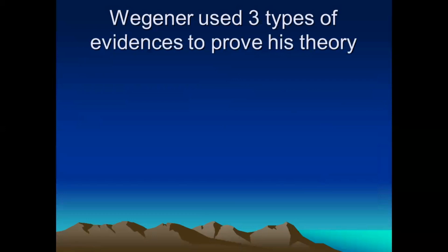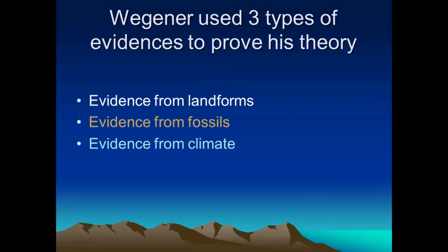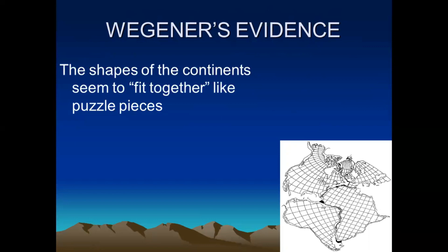Now, what are the evidences to prove his theory? The first is evidence from landforms. Most of us have played with jigsaw puzzles in childhood. If you take these continents as jigsaw puzzles, you can invariably see that they fit with each other. For example, the eastern part of South America fits easily into the western part of the African coast. Similarly, North America fits with part of Eurasia. This jigsaw fit was one of the evidences he gave.